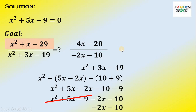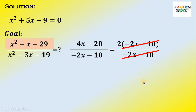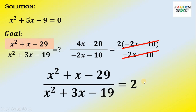Now, factoring out 2 from the numerator gives 2 times negative 2x minus 10, all over negative 2x minus 10. We can cancel negative 2x minus 10 from both numerator and denominator. Therefore, the value of x squared plus x minus 29 all over x squared plus 3x minus 19 is simply 2. And we're done.